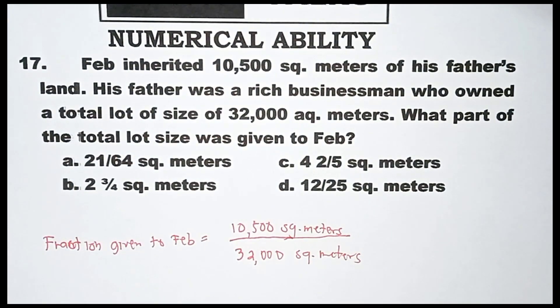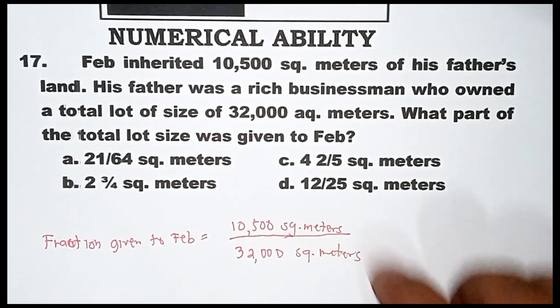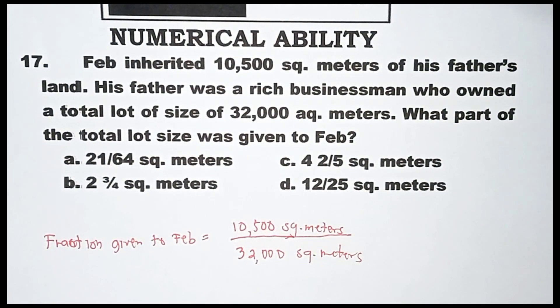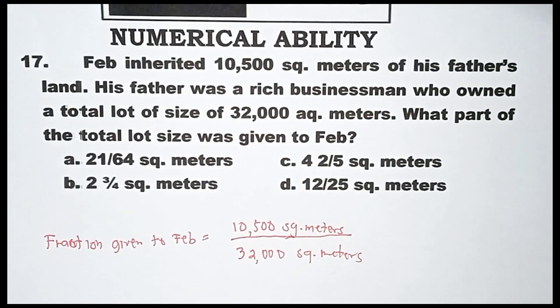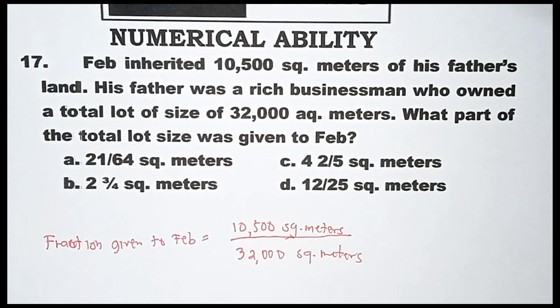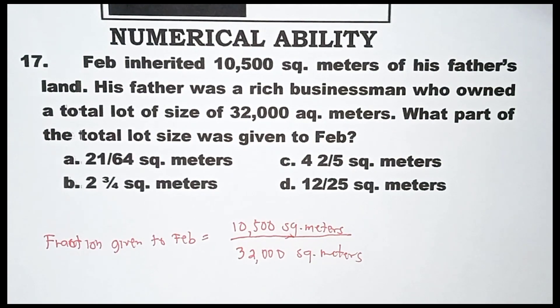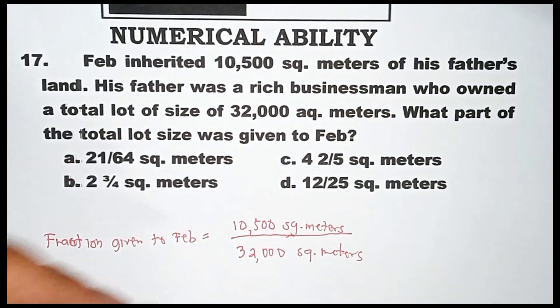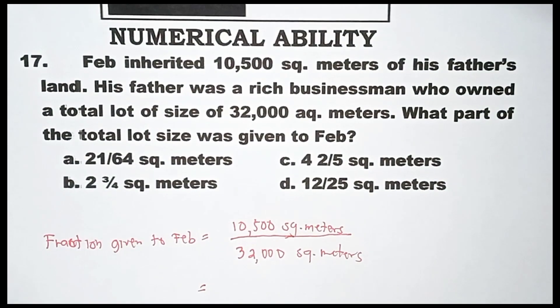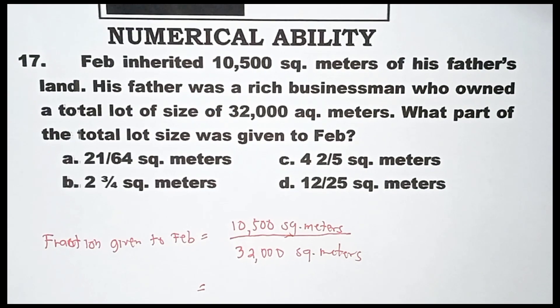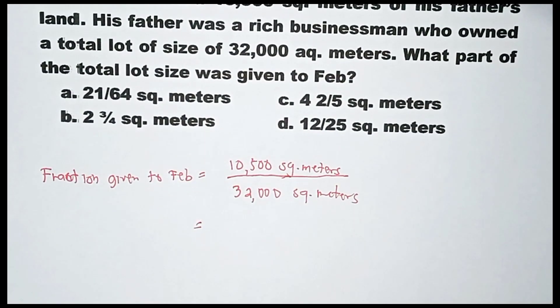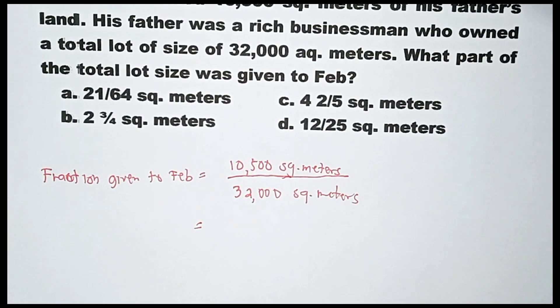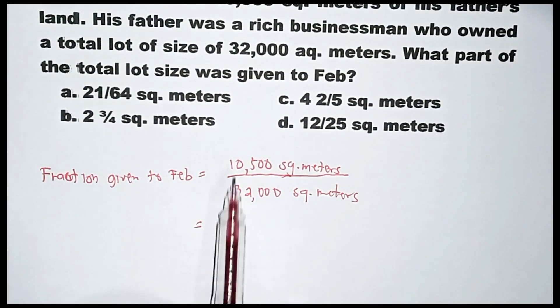Okay, nailagay ko na po yung 32,000 square meters. Next, para hindi kayo mahirapan dito, punin nyo yung greatest common factor nung dalawa. Para hindi na tayo mag-divide ng maraming beses, or pwede na natin sigurong tanggalan ng dalawang zero. Okay, pwede rin yun, pero naiisip ko kasi kailangan ko syang i-divide by 500 kasi nakikita ko na yun yung common factor nilang dalawa.